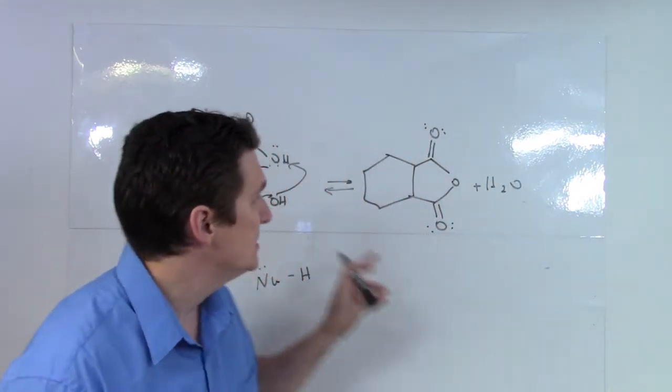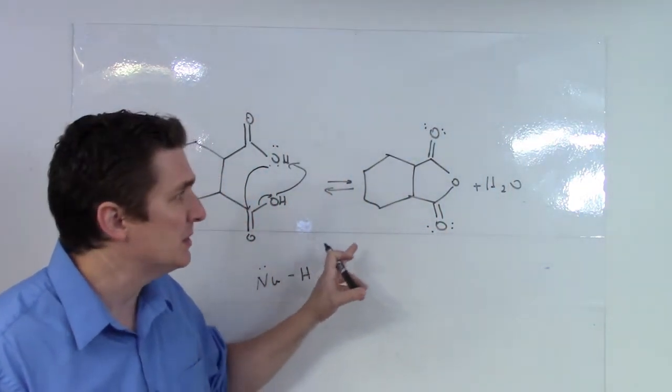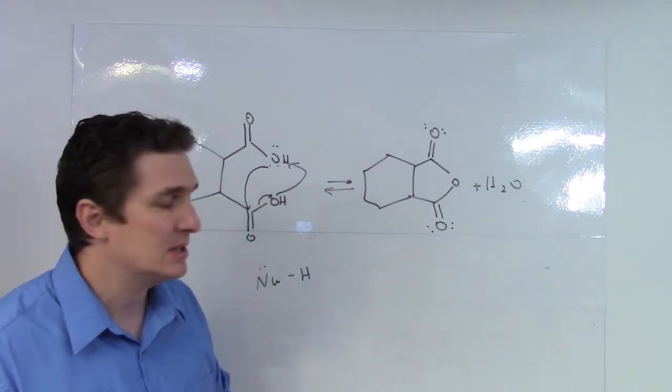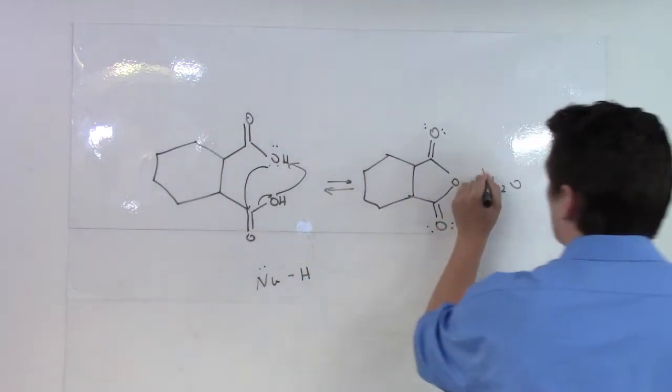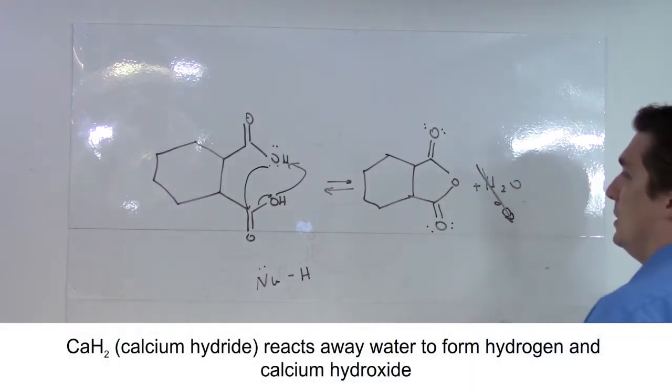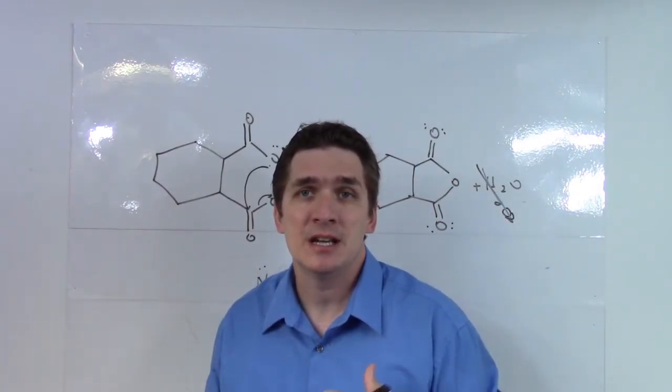Now this is reversible, so if we were to add a whole bunch of water this would be the predominant compound. But if we were to run this under anhydrous conditions, so we threw something here like calcium hydride that would eliminate the water, we would ultimately produce the acetic anhydride and we would have this available for any type of reactions we want to run.